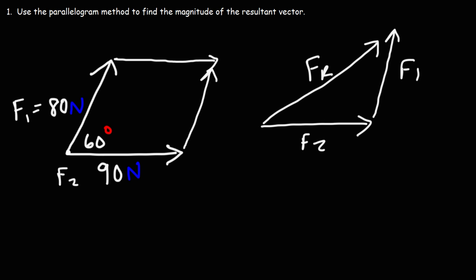Now when dealing with parallelograms, what you need to know is that adjacent angles are supplementary. So these two angles here, they're supplementary, which means they add up to 180. So this angle is 180 minus 60, which means it's 120.